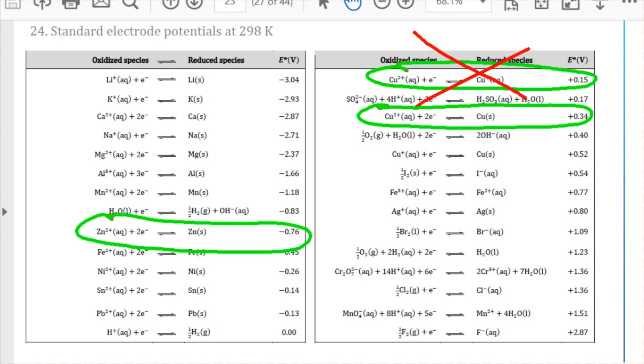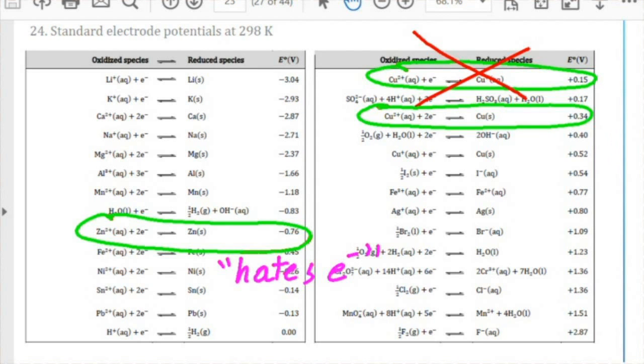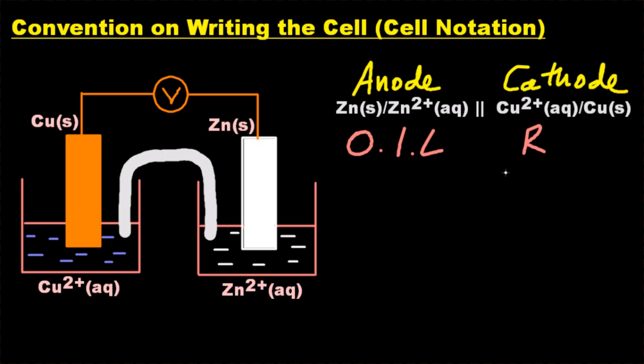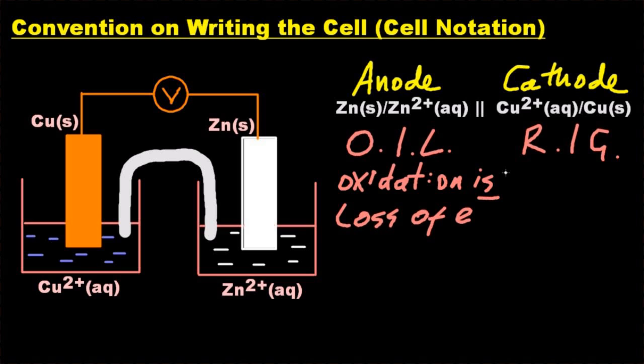The one that is the anode, the one that undergoes oxidation, that has the most negative e-cell value. Oxidation is loss of electrons, and that zinc half-cell hates electrons. Now you have to reverse that equation - that's another video - you have to reverse the anode equation from the electrochemical cell series. So we've got oil rig: oxidation is loss of electrons.